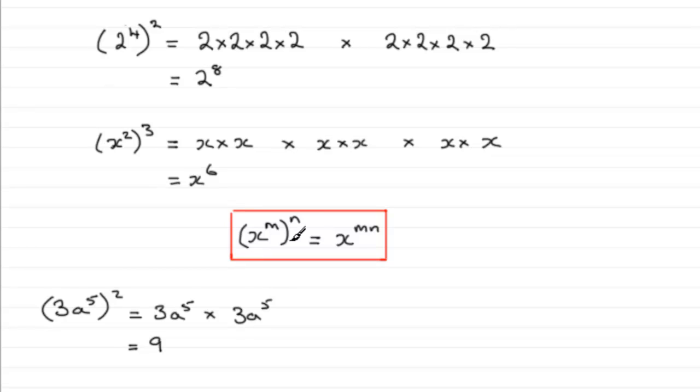Or simply we use this rule here, which is a to the power five, all squared. Five times two, which is ten. a to the power ten.